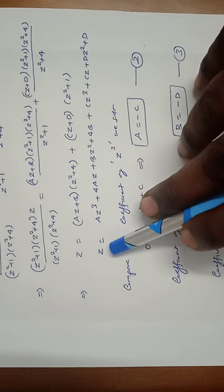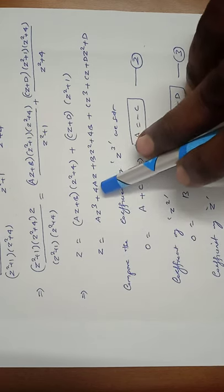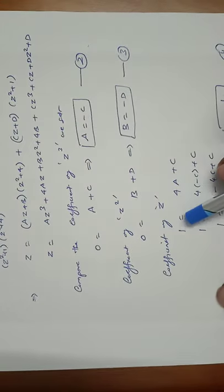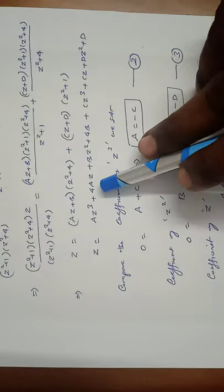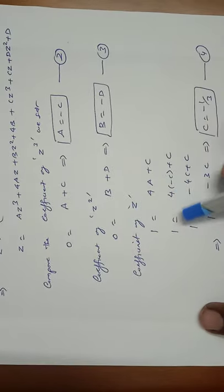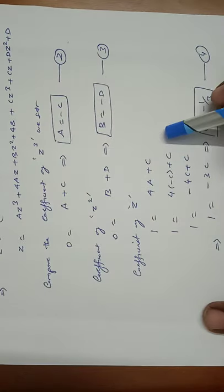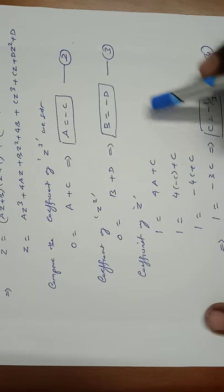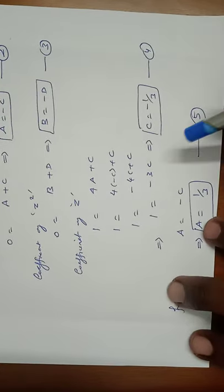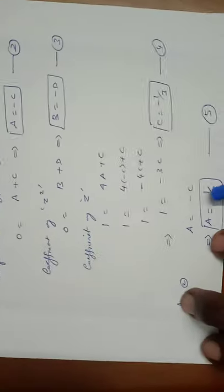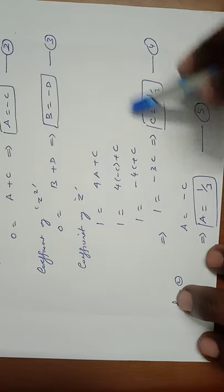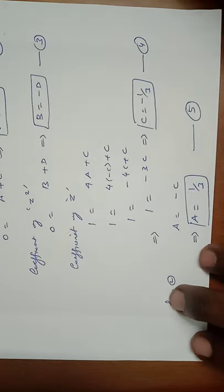Comparing coefficients of z: the left-hand side gives 1. The right-hand side gives 4A + C. Substituting A = −C from equation 2: 1 = 4(−C) + C = −4C + C = −3C, so C = −1/3 (equation 4). Then since A = −C, A = −(−1/3) = 1/3.